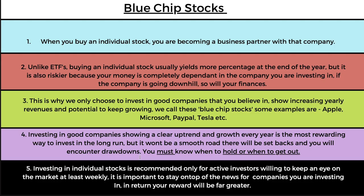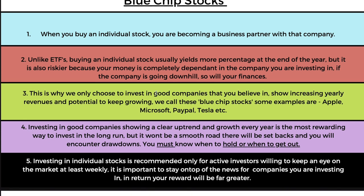The next way to invest is in blue chip stocks. When you buy an individual stock you are becoming a business partner with that company, so don't buy companies you don't want to be a partner with. Unlike ETFs, buying an individual stock usually yields a higher percentage at the end of the year, but it is also riskier because your money is completely dependent on the company you're investing in. If the company is going downhill, so will your finances. This is why we only choose good companies that show increasing yearly revenues and potential to keep growing — we call these blue chip stocks.